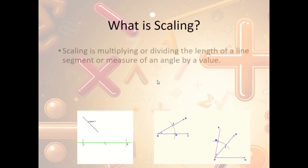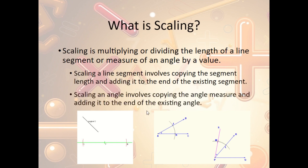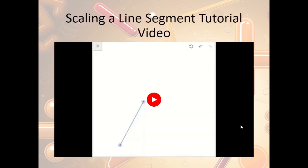What is scaling? Scaling is multiplying or dividing the length of a line segment or measure of an angle by some value. We can scale a line segment by copying the segment length and adding it to the end of the existing segment. Scaling an angle involves copying the angle measure and adding it to the end of the existing angle. For example, copying a segment's distance once doubles it; copying an angle onto itself creates an angle exactly twice what we started with. There's a video showing how to scale a line segment using Desmos.